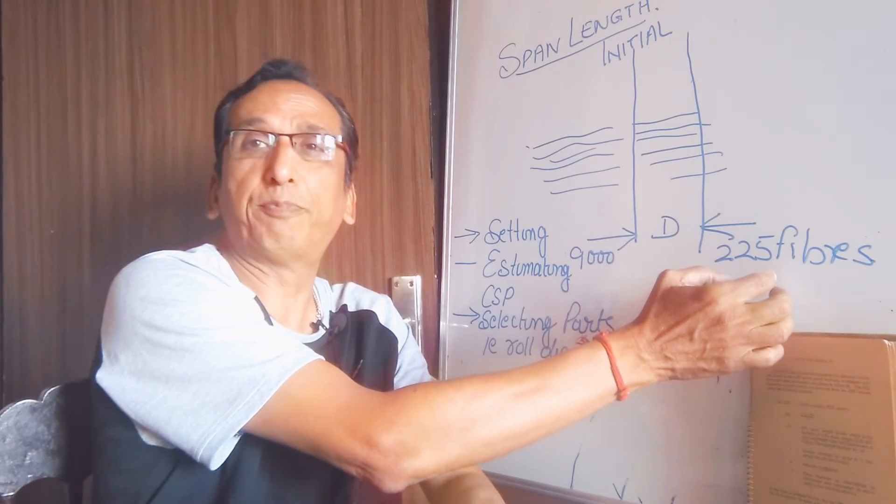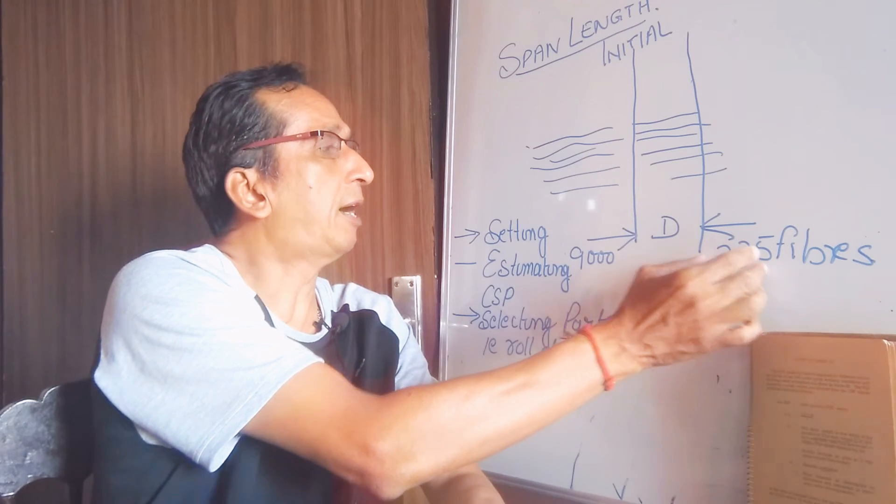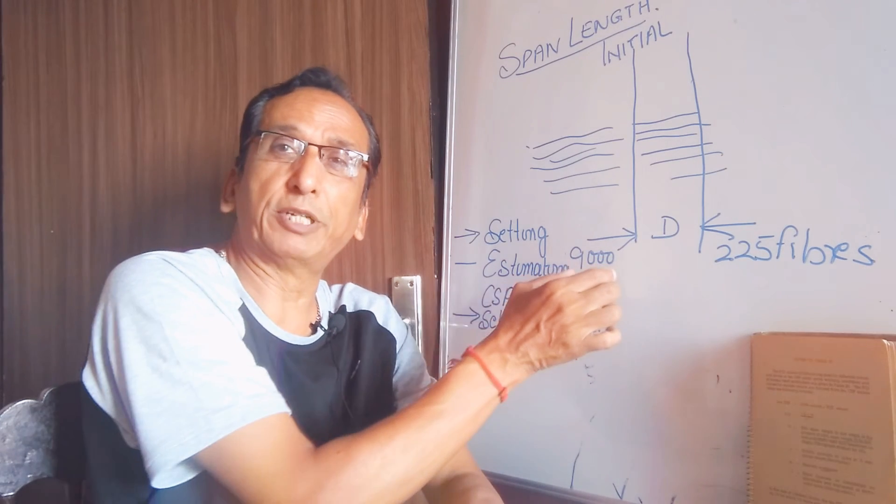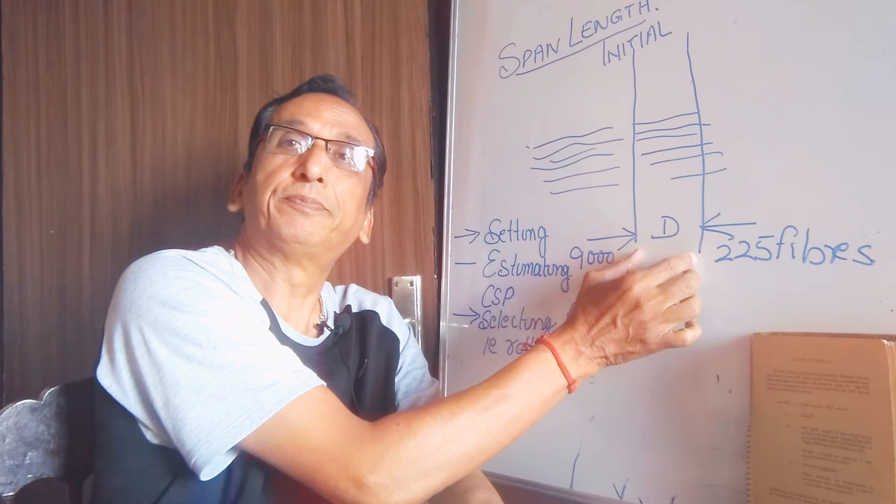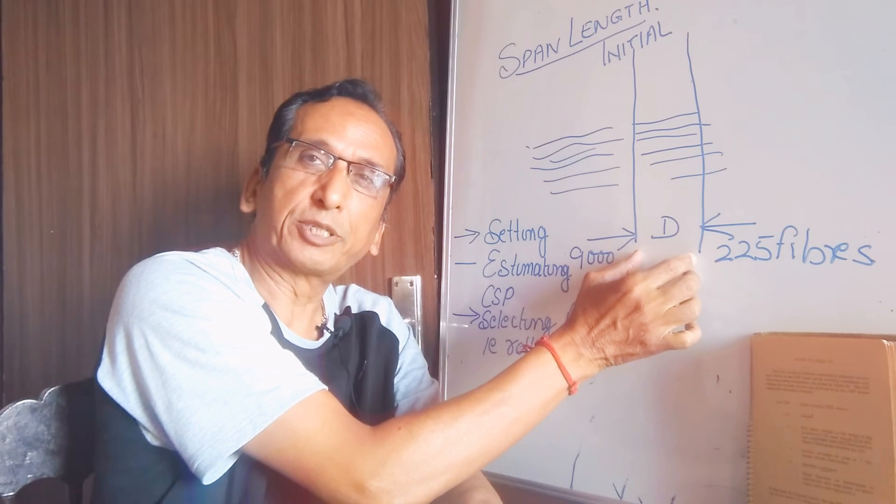out of a total population of 9000 fibers, so this distance is called 2.5% span length.